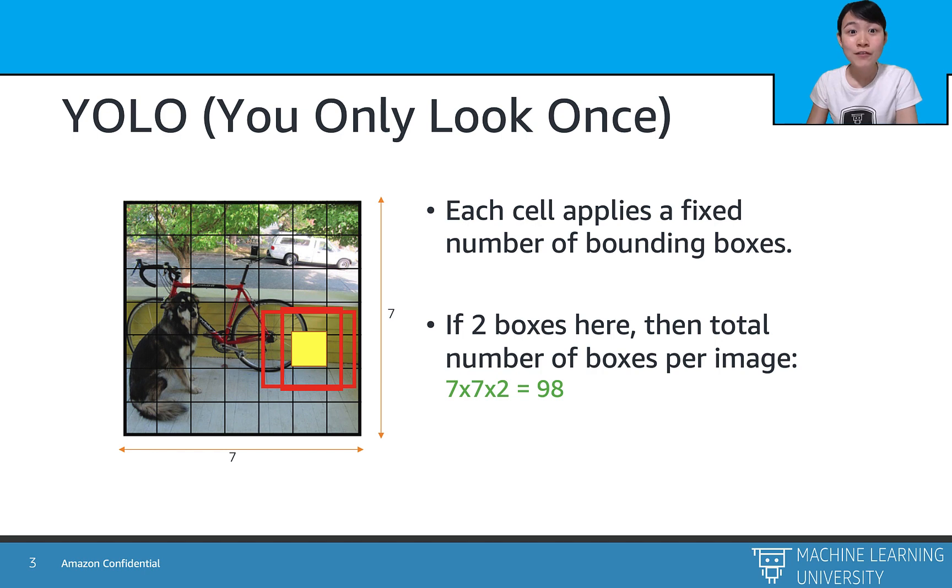And then, for each cell, we apply a fixed number of anchor boxes with different shapes and sizes. If assuming two boxes at each grid, then the total number of boxes per image will be 7 by 7 by 2, which equals 98.